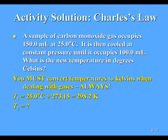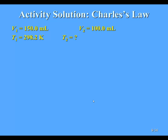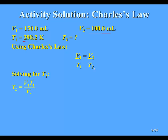I want to work in Kelvin with these problems. My initial temperature was 25 degrees Celsius; adding 273.15 gives T1 equals 298.2 Kelvin. To solve for T2, I'll use Charles' Law. V1 was 150 milliliters, T1 was 298.2 Kelvin, V2 was 100 milliliters, and I want to solve for T2. Using V1/T1 = V2/T2, I can multiply both sides by T2, then multiply by T1 and divide by V1, so T2 equals V2 times T1 divided by V1.